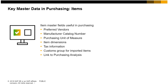The purchasing data tab indicates the usual vendors who sell the item, how to identify the item in a catalog, the units of measurement used for the item for purchasing purposes, and the dimensions of the physical item. Information is also available on taxes and on customs groups for imported items. For items with a purchasing history, you can click on the chart icon on the left of the tab to display a graphical purchase analysis.